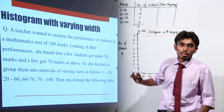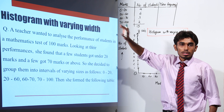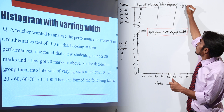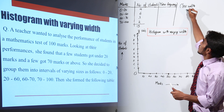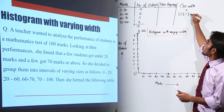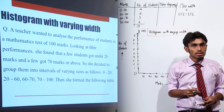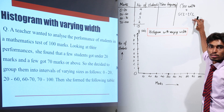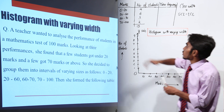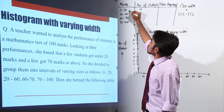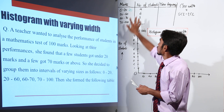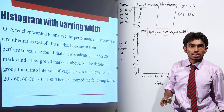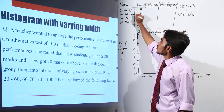For the first class interval, the class width is 20 minus 0. We all know that class width is equal to upper class limit minus the lower class limit. UCL stands for upper class limit and LCL stands for lower class limit. So for this class, the class width will be 20 minus 0, that is equal to 20. And for the second class interval, the class width would be 60 minus 20, that is equal to 40.